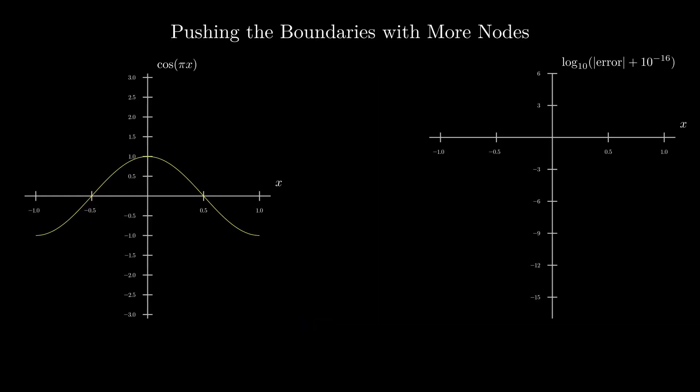Now we will push the boundaries by trying higher orders and more nodes. On the left, we see the exact cosine function and a progression of higher order interpolants. On the right, we see the point-by-point error in the interpolation on a logarithmic scale. Very quickly, the interpolant matches the function so well the error is invisible on the left and the maximum error is diminishing rapidly on the right.